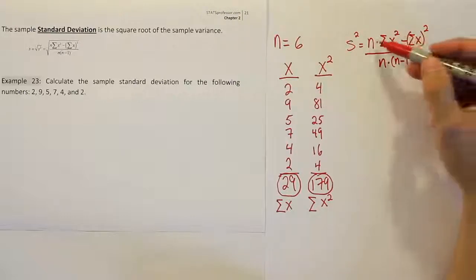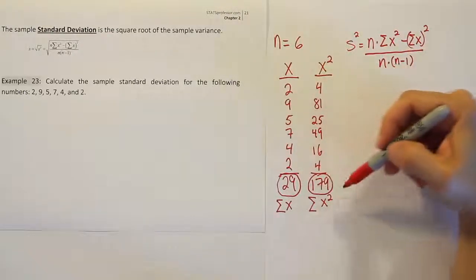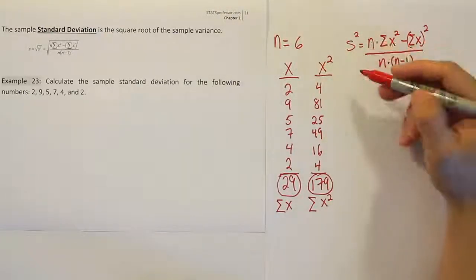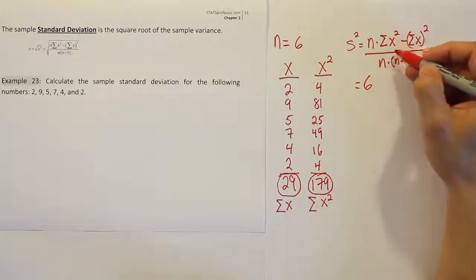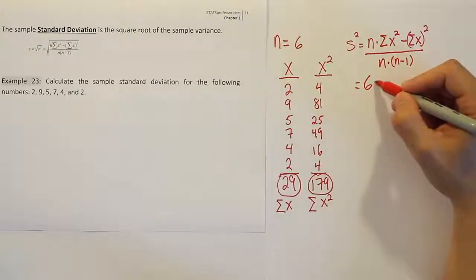Okay, so we're just going to fill in these values. We have all of them here, so it's actually pretty simple to do. We're going to say the n here is 6. This guy here, the sum of x squared, well that's 179.